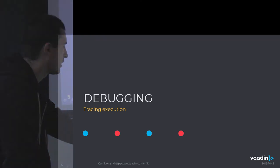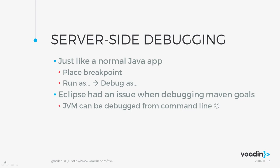Let's start with debugging — it's basically tracing the execution of the system. A Vaadin application consists of two parts: the server-side code and the client-side code, and mostly when we are developing an application, we are coding the server-side part. So one would expect you can debug it exactly the same way as a normal Java app — that's actually true, except I found a few issues in older versions of Eclipse when using Maven. I don't know if the issue has been solved in the most recent version.